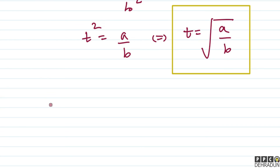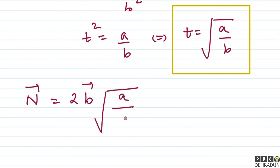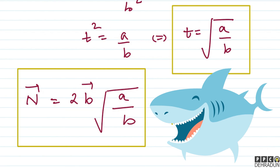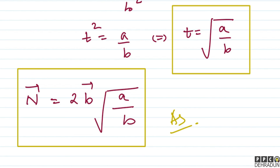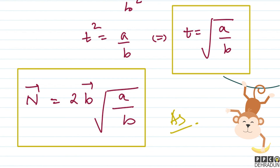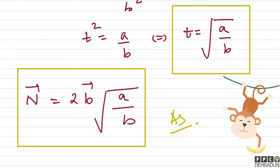तो बच्चो, n vector जो है वो 2 times b vector into t के बराबर था, और t की value है √(a/b)। तो n vector का final answer है: n vector equals 2 times b vector multiplied by √(a upon b)। I hope बच्चो कि आपको यह सवाल का solution अच्छे से समझ आया होगा। In case कोई doubt रहे तो feel free to contact me. Take care, bye-bye।